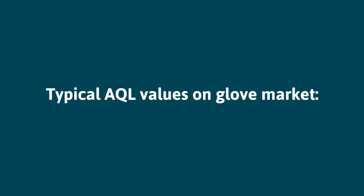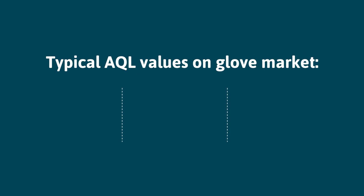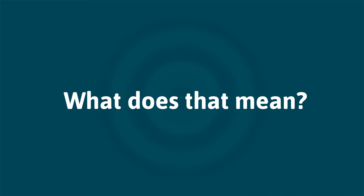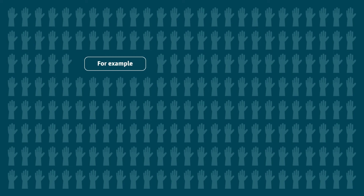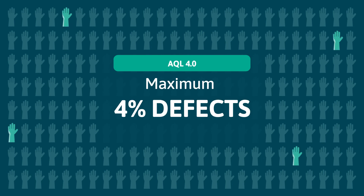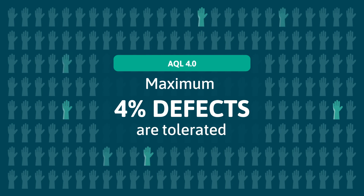The typical AQL values on the glove market are 4.0, 1.5, and 0.65. What does that mean, and how can you interpret those different AQL values? Let's consider an example: if the manufacturer chooses to release to AQL 4.0, it means that no more than 4% defects are tolerated in the entire production.